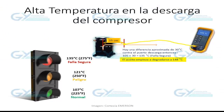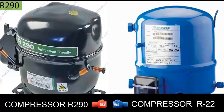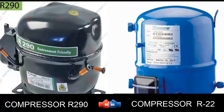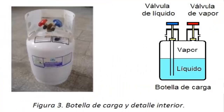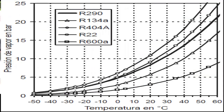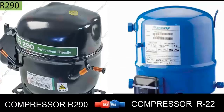The temperature at the compressor outlet is significantly lower when R290 is used compared to the resulting temperature when using R22. Both the compressor with R290 and the compressor with R22 can be charged in liquid phase as well as vapor without a problem. The pressures of R290 and R22 are not identical, but they are quite similar.